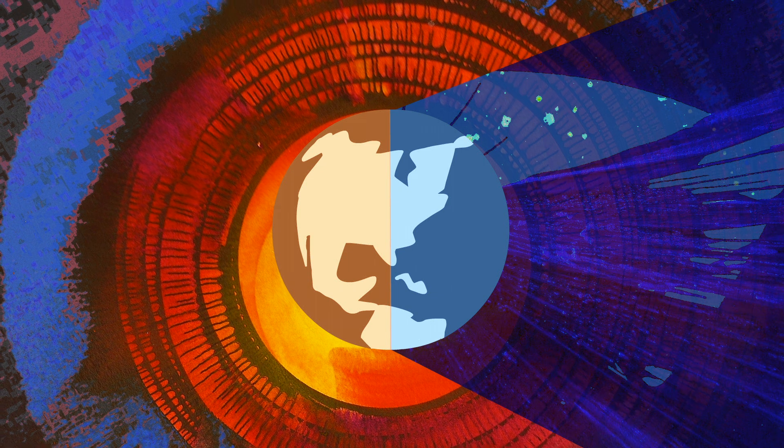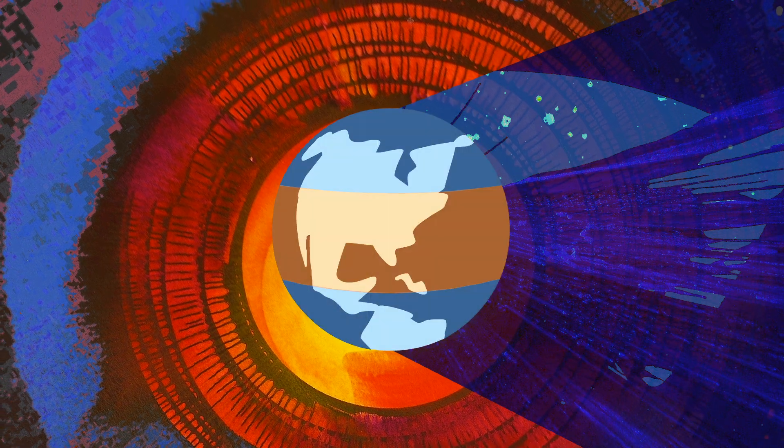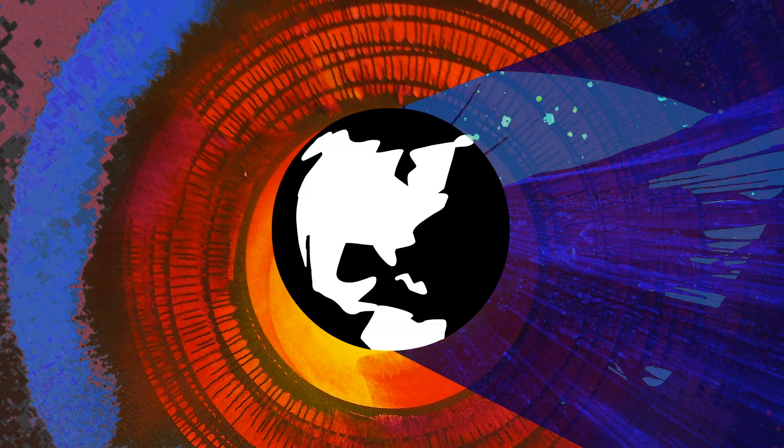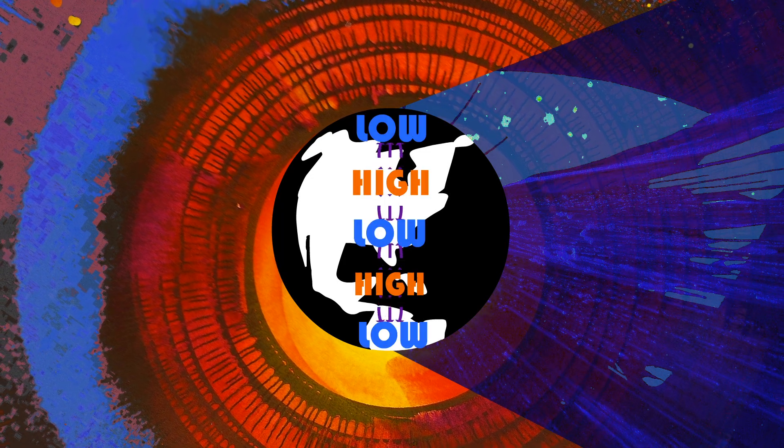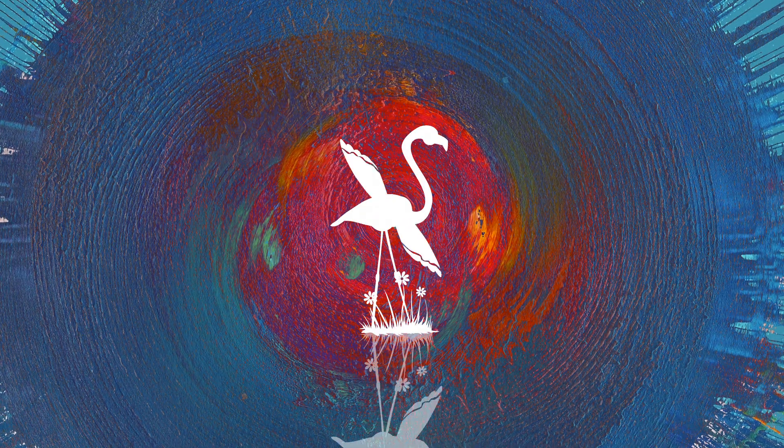The Earth is warm on the daytime side, cool on the nighttime side, and it's warmer at the equator than at the poles. The differences in temperature make differences in air pressure, and the differences in air pressure make air move. They make the wind blow.